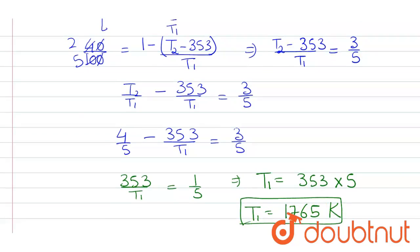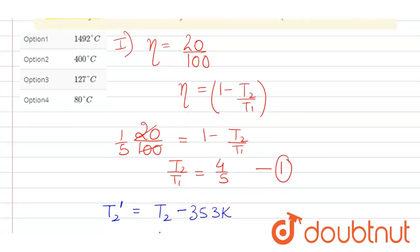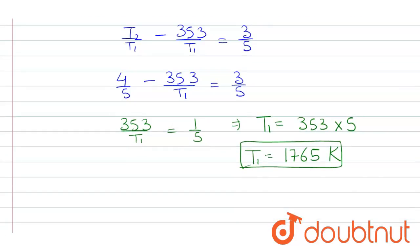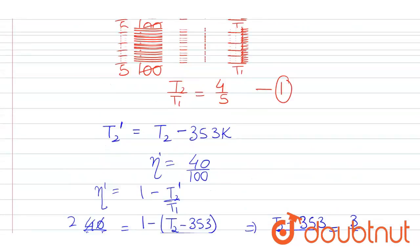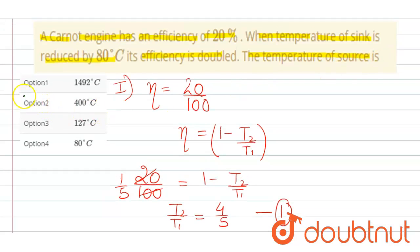So the correct answer will be... Let us convert into degree Celsius by subtracting 273. So it will be 1765 minus 273. That comes out to be 1492 degree Celsius. That means option 1 is correct.